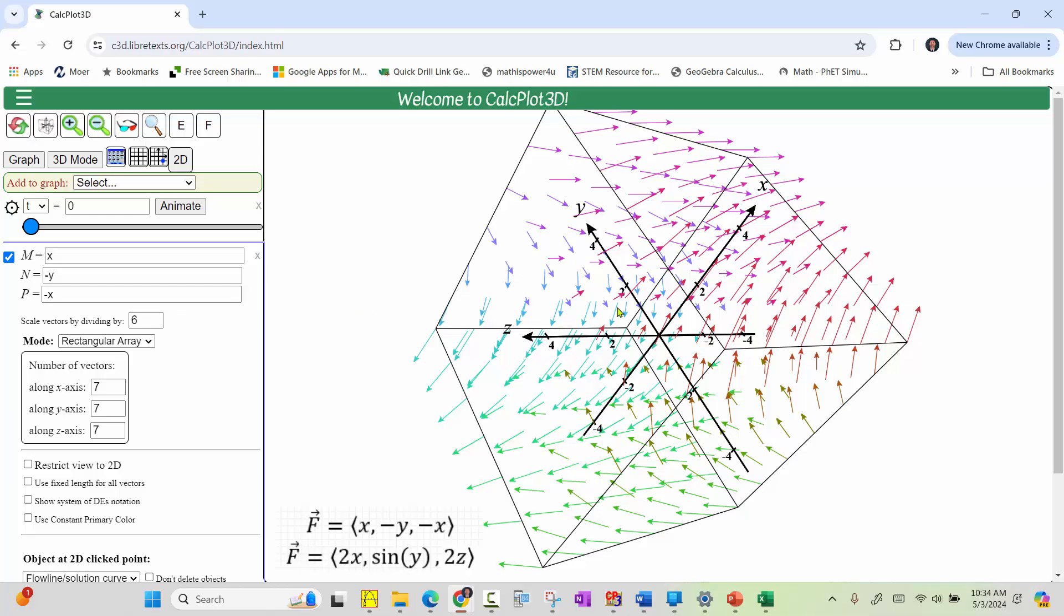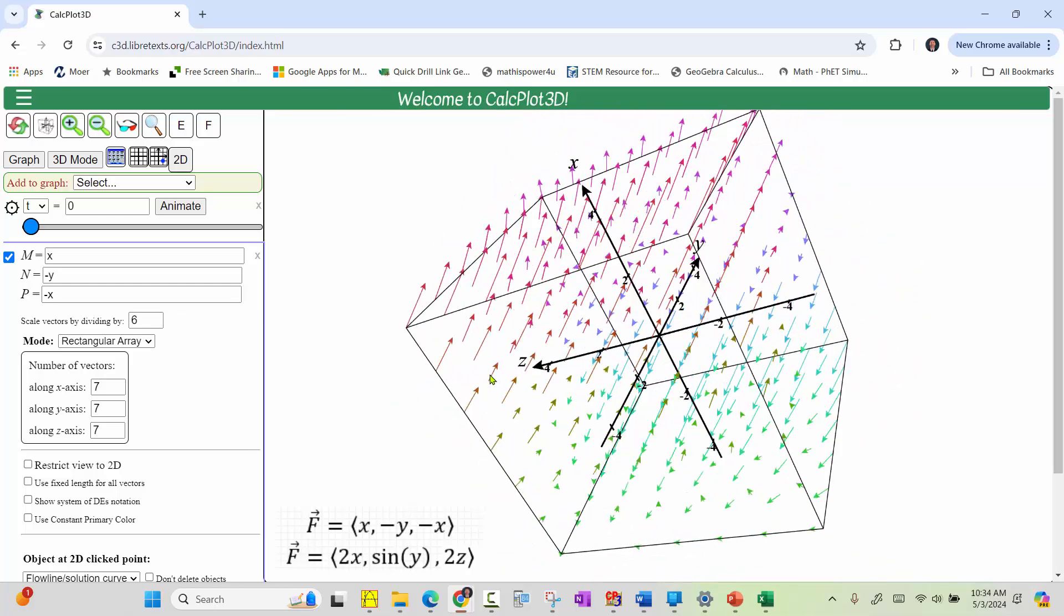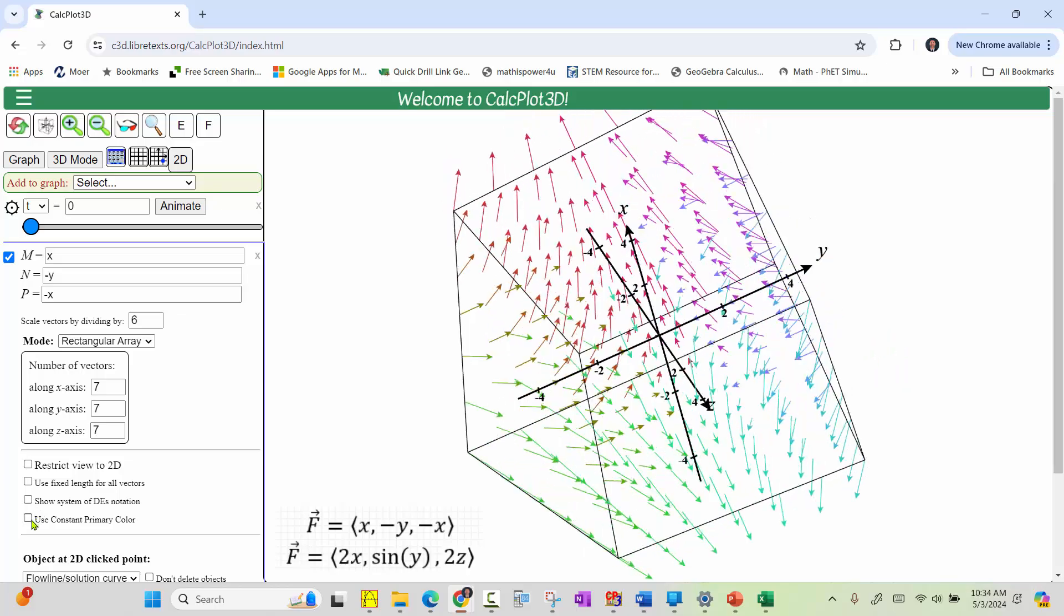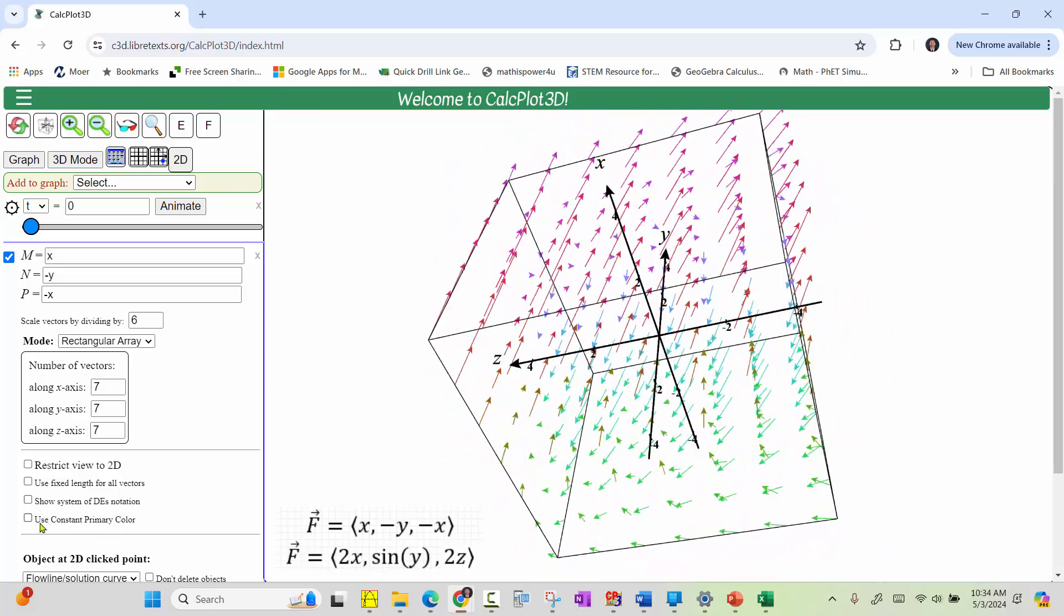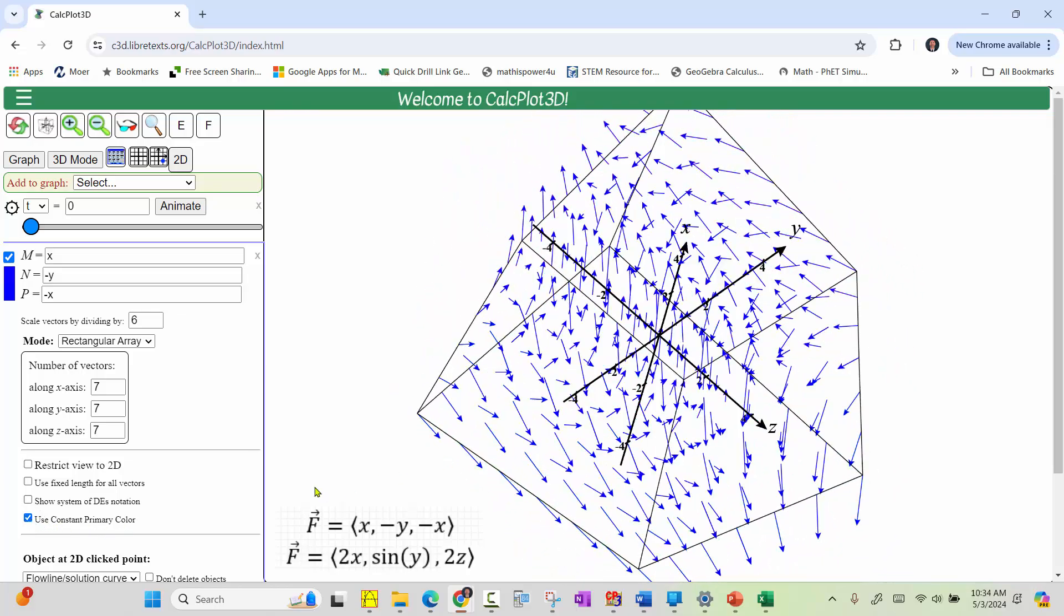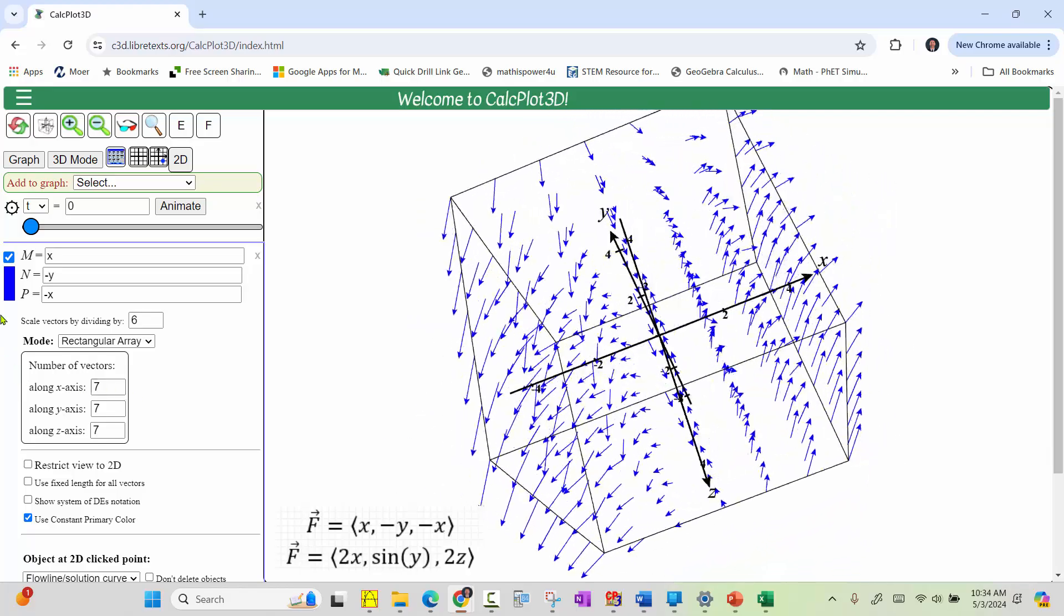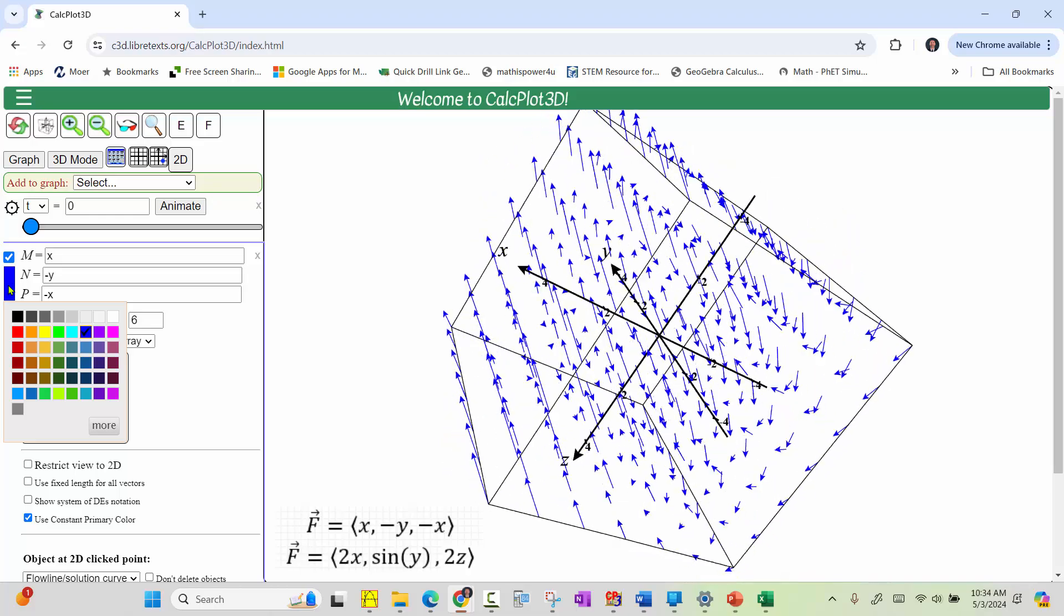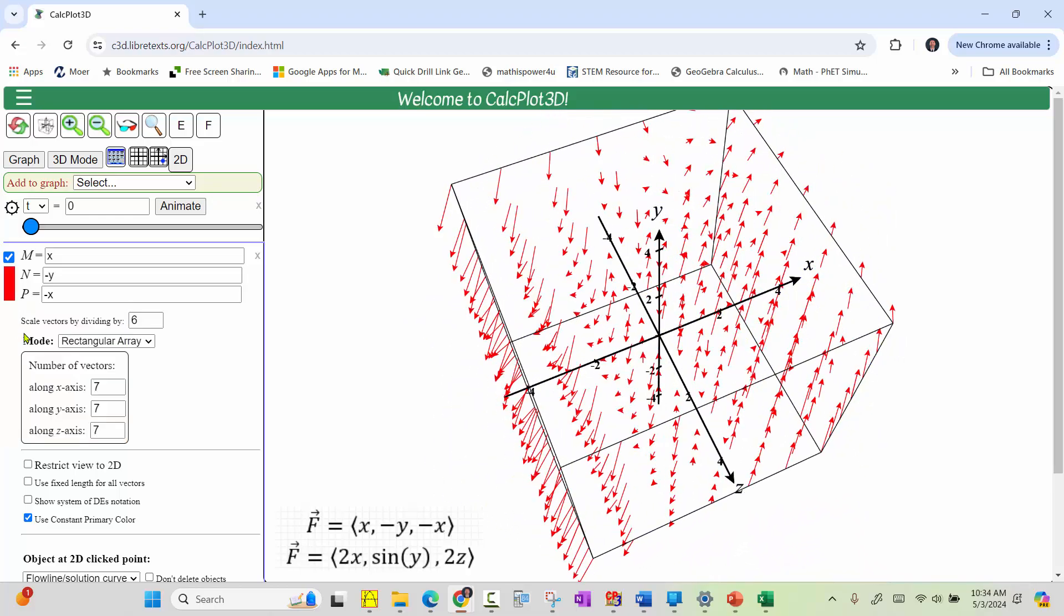If we want to change the vector field so all the vectors have the same color, we can click below where it says use constant primary color. By default, all the vectors are now blue, which we can change by clicking on the blue bar at the top and selecting a different color. Let's go back to the default setting and not use constant primary colors.